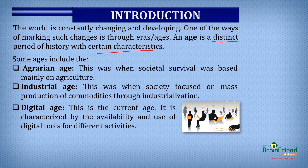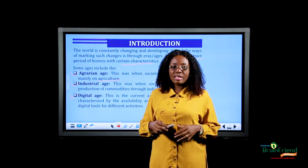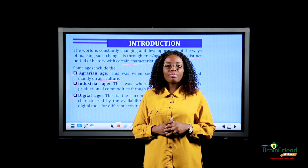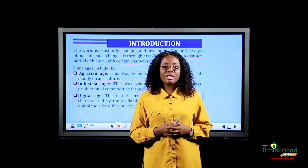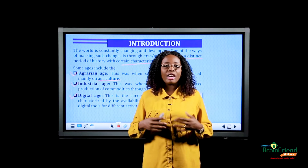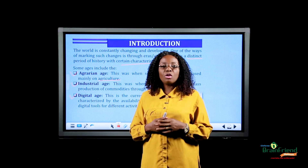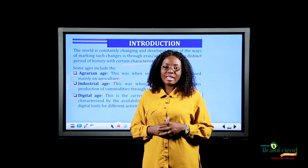Some of these ages are the agrarian age, when societal survival was based mainly on agriculture and it required lots of intensive hard labor. At some other point, we had the industrial age, when several industries were created and goods were produced in mass. And finally, we have the digital age, which is the present age we are experiencing. In this digital age, lots of processes — agricultural, industrial, economic — are being operated by the use of digital technologies.